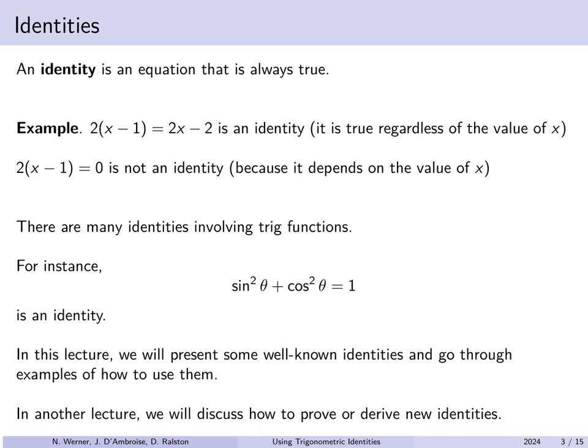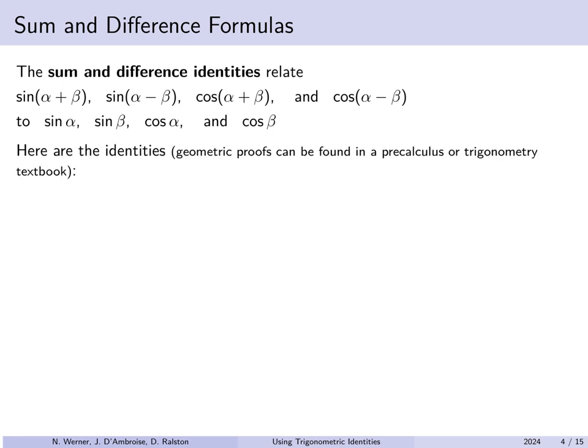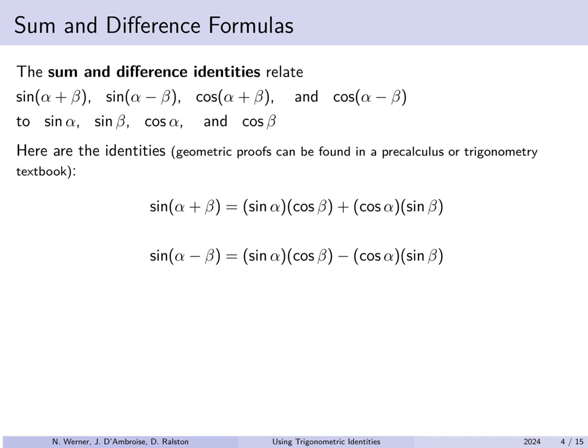First up: the sum and difference identities for sine and cosine. We're going to relate the sine of a sum alpha plus beta, or a difference alpha minus beta, to the sines and cosines of the individual angles alpha and beta. The sine of alpha plus beta is always equal to sine alpha cosine beta plus cosine alpha sine beta. The sine of the difference replaces that plus with a minus.